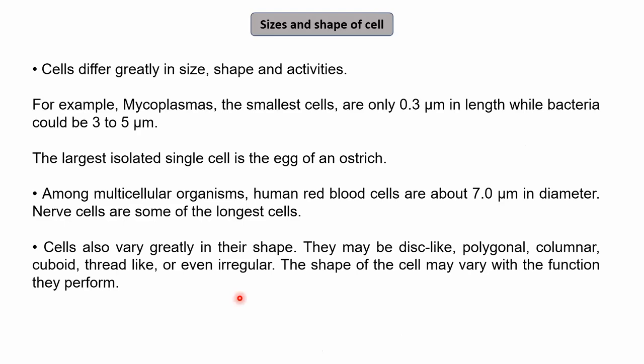Cells are present in varied shapes and sizes. Their size and shape differ greatly based on the activities they perform. For example, the smallest cell is mycoplasma, also called PPLO (pleuro-pneumonia-like organisms), which are only 0.3 micron in length. Bacteria can be 3 to 5 micron. Animal cells can be even larger. The largest isolated single cell is the egg of an ostrich.